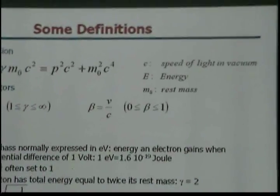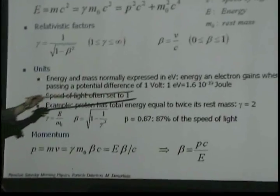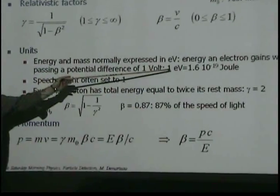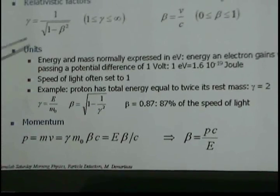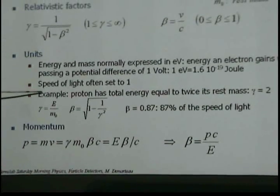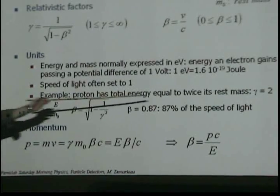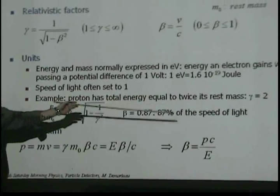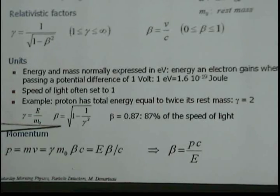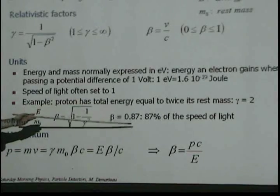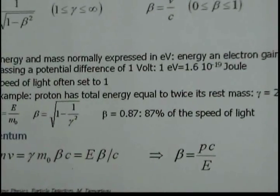So, the units that we always use is electron volts. The electron volt is the energy that the particle gains when it traverses a potential difference of one volt. But to give you an example of gamma, what the use of gamma is. So, suppose a proton has a total energy twice its rest mass. So, gamma is 2. And with this equation, you figure out that if gamma is 2, then it runs at 0.87 speed of velocity.